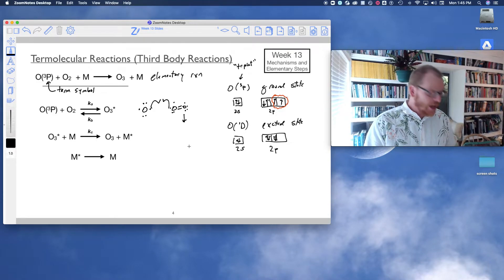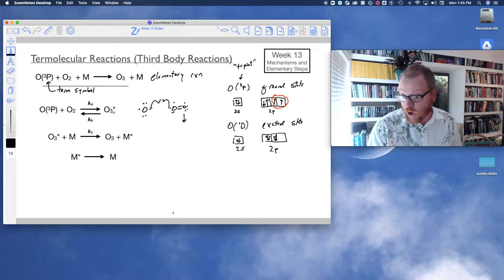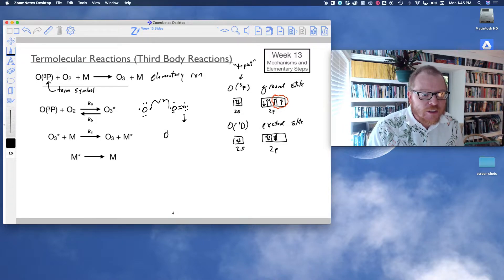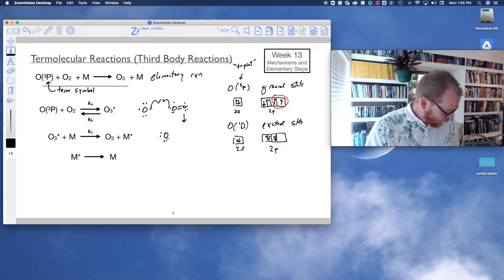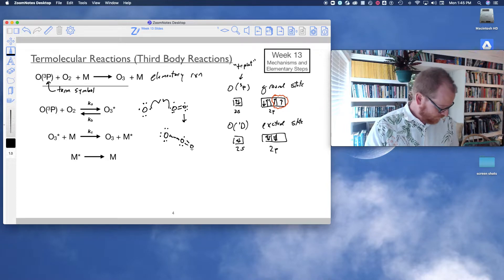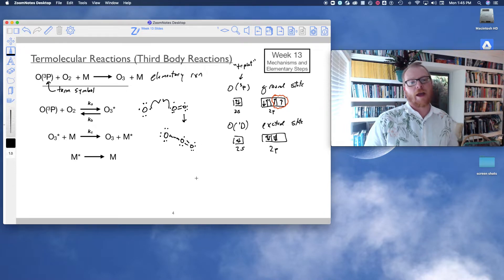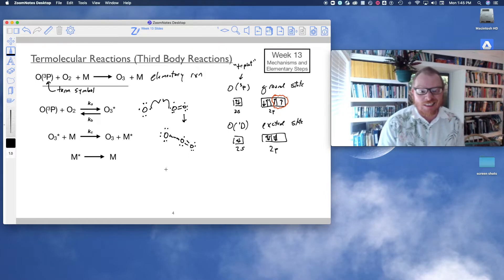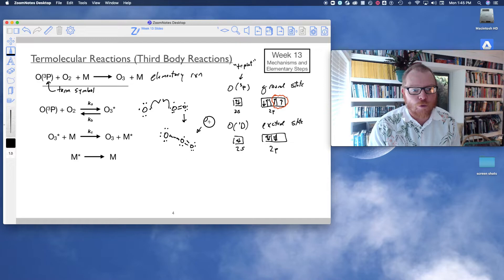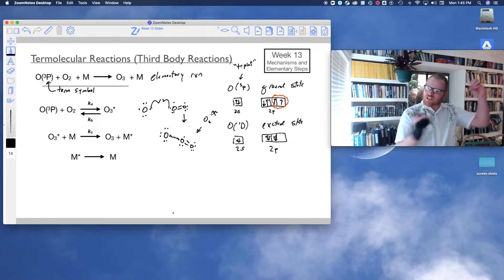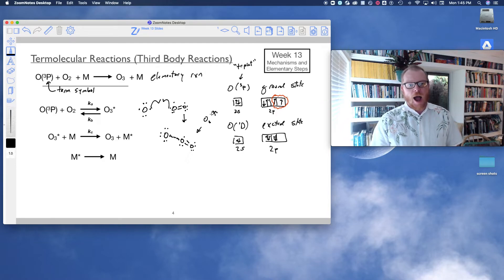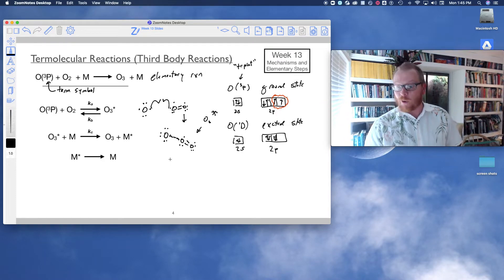That forms an unstable O3 star. That's what that star means. It looks something like this. We've got our lone pairs all around. And then now we've got this elongated bond here with this other oxygen. So this is really unstable. This is our O3 star with that extra elongated bond. The molecule hasn't quite formed yet.